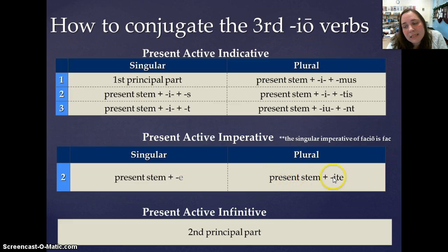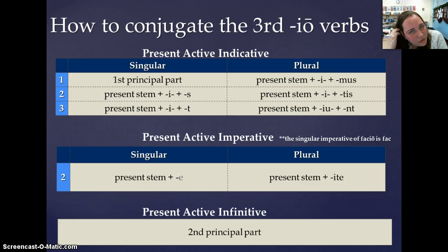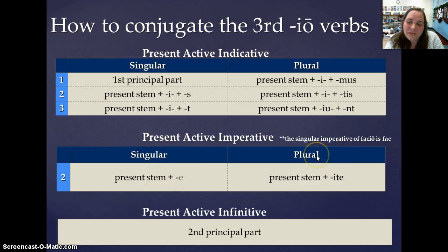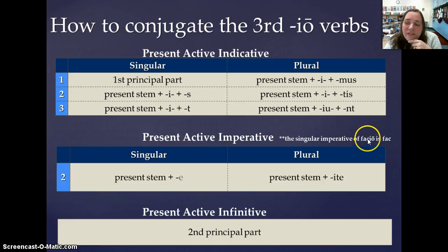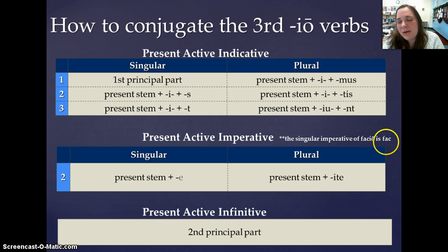The plural imperative is the present stem plus -ite. There are four irregular verbs that are going to form their singular imperative without that E ending. They are duc, dic, fac, and fer. The first one is a Third IO — facio — and its singular imperative is going to be fac instead of face. I just want you to make note of it, and every time we see one of these irregular verbs, I will point it out to you.